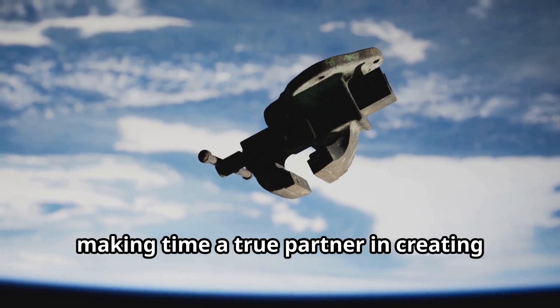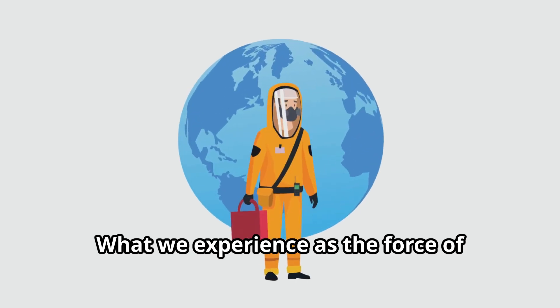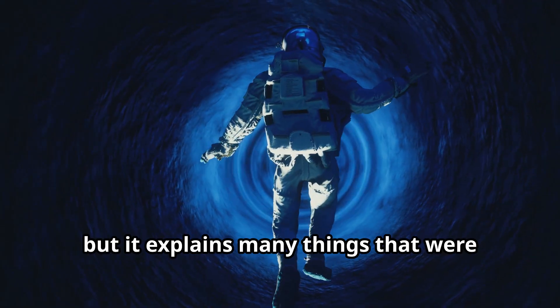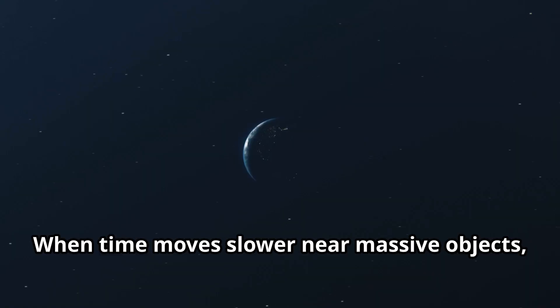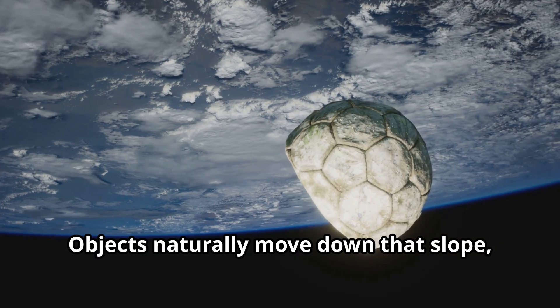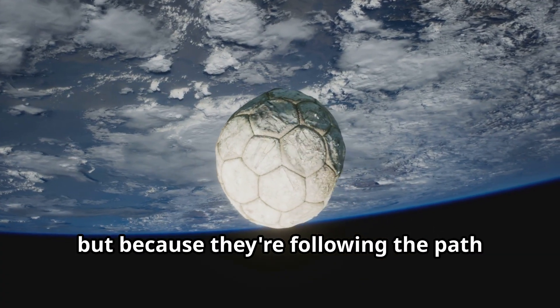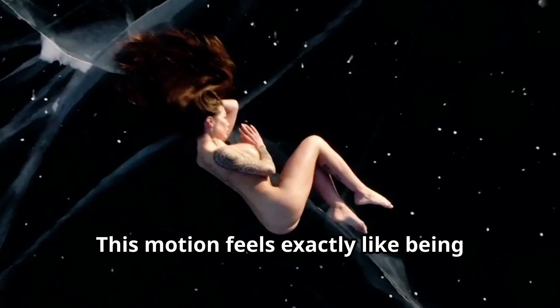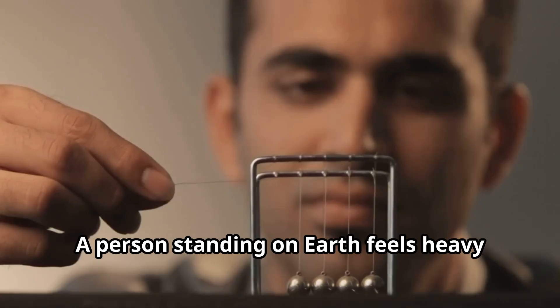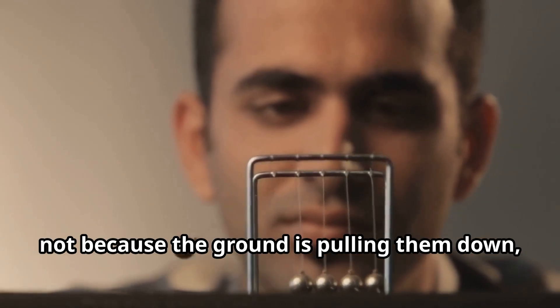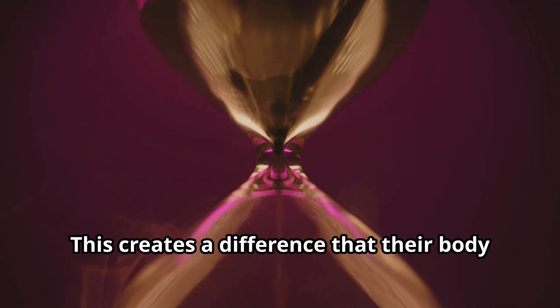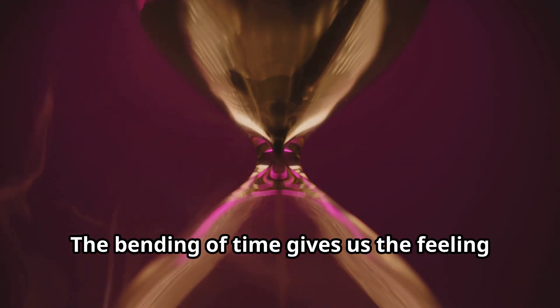What we experience as the force of gravity is actually the result of time flowing differently in different places. This may sound surprising, but it explains many things that were once a mystery. When time moves slower near massive objects, it creates a kind of invisible slope. Objects naturally move down that slope, not because they're being pulled, but because they're following the path through time that requires the least effort. This motion feels exactly like being pushed or pulled, but it's actually just a response to the way time is arranged. A person standing on Earth feels heavy, not because the ground is pulling them down, but because the time beneath their feet is flowing more slowly than the time above their head.